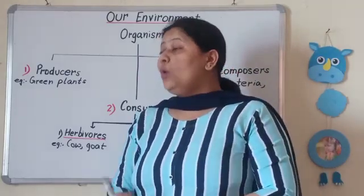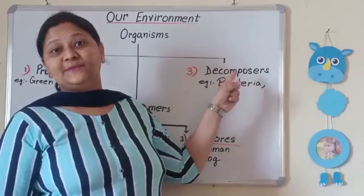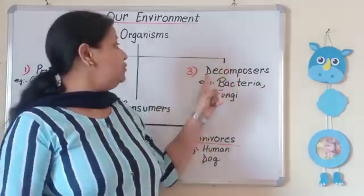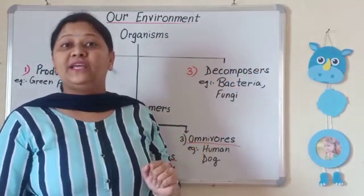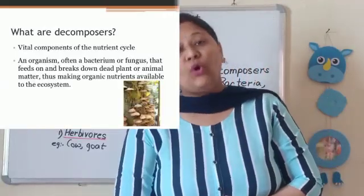Now when we are coming to the third type of organisms based upon the manner in which they obtain their nutrition: decomposers, for example bacteria and fungi. So what do they do? They depend on dead and decaying organic matter.